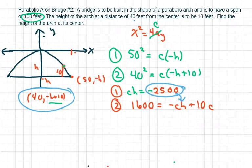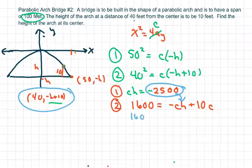So we get 1,600 equals negative, negative 2,500 plus 10C.